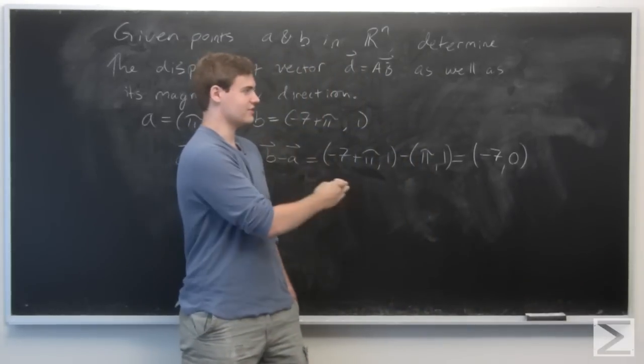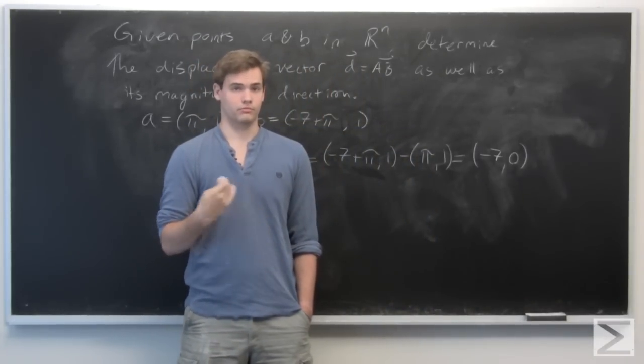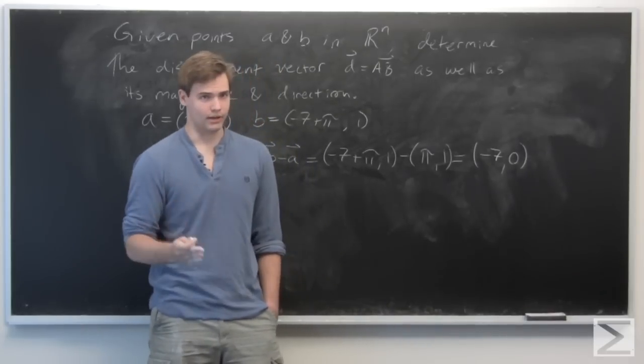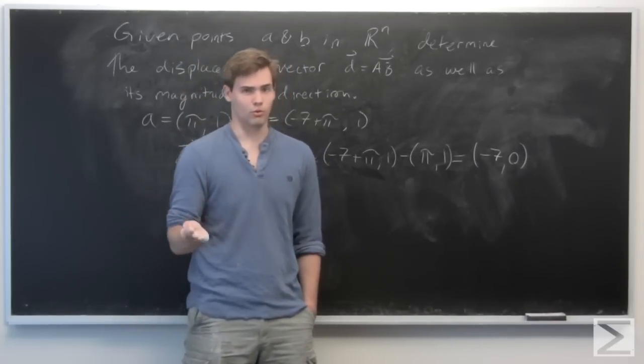So that d is just minus 7 comma 0. And then this is nice because it's easy enough to find its magnitude right off the bat, because there's only one non-zero coordinate.